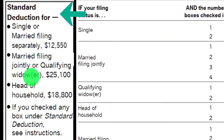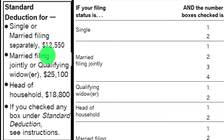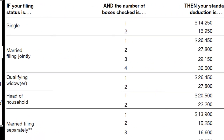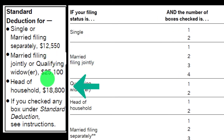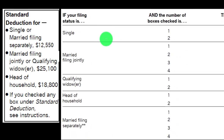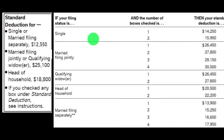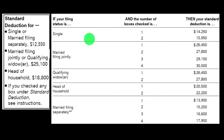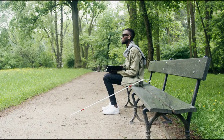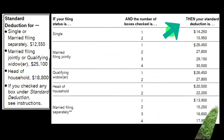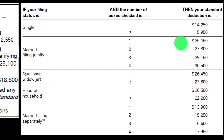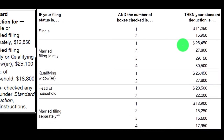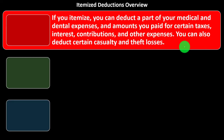This is the standard deduction with a bit more complexity. The left-hand side shows the standard deductions for single filers, married filing joint, and head of household. On the right-hand side, there are added components for someone who is older — over the age limit — which can increase the standard deduction, and also if they were blind. Keep those increases in mind as you're thinking about whether someone is going to benefit from itemized deductions.